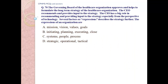Question number 70. The governing board of a healthcare organization approves and helps to formulate the long-term strategy. The CEO recommends and provides input to the strategy. The CIO has a big role in recommending and providing input to strategy, especially from the perspective of technology. Several factors are expressed to describe the strategy further. The expressions of an organization are: A. Mission, vision, values, goals.